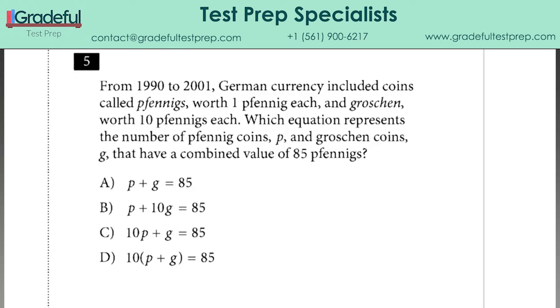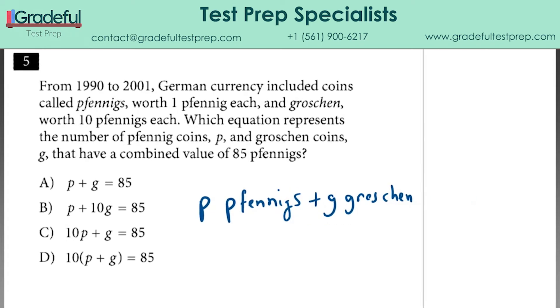Question number 5 is a really interesting example of the kinds of things the SAT does to manufacture difficulty. It's a really easy question, but with all of the words in other languages, we're encountering a lot of strangeness that could cause people to get it wrong. The way to keep it together is to use the units for everything you're talking about. We have P Pfennigs and G Groschen.